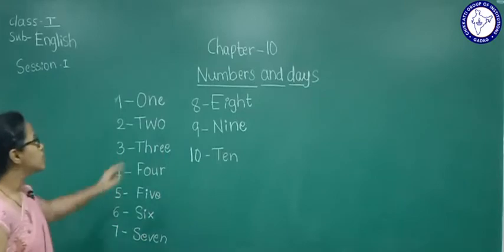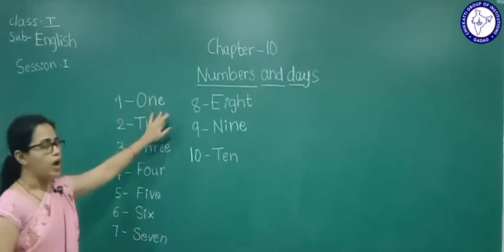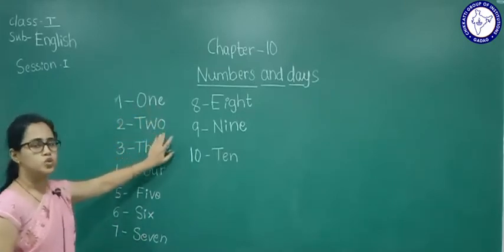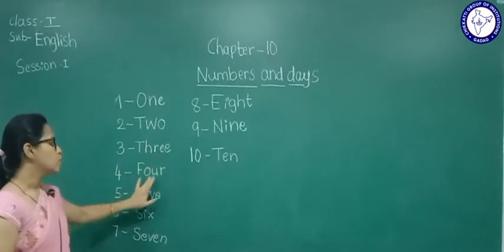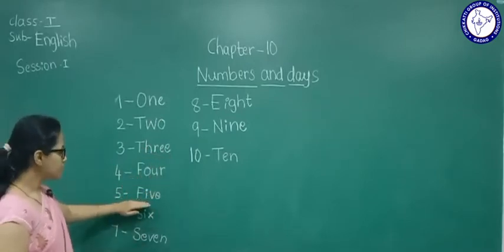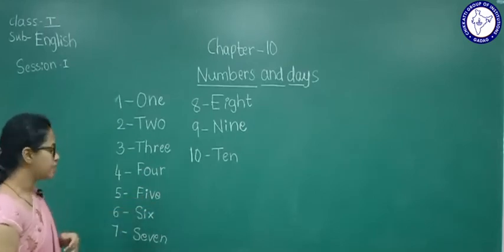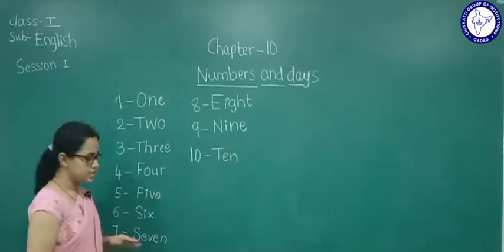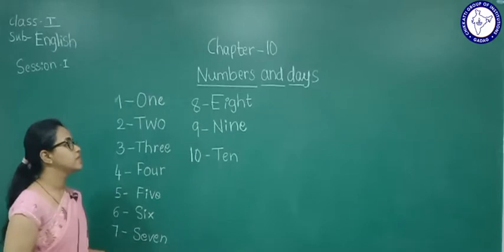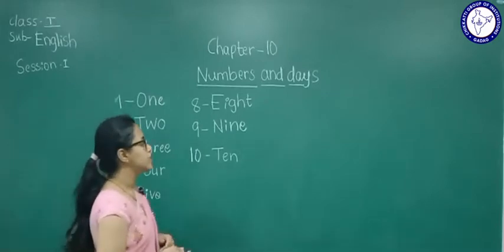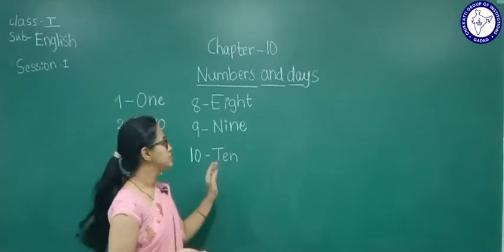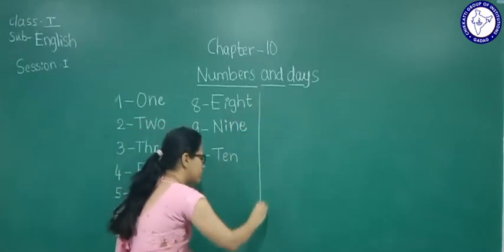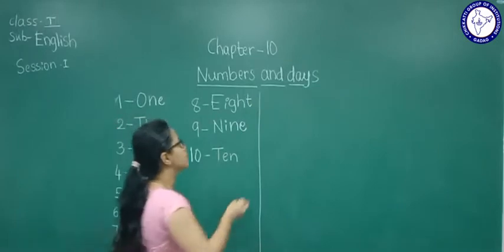We will repeat this one. One, O-N-E-1, T-W-O-2, T-H-R-E-E-3, F-O-U-R-4, F-I-V-E-5, S-I-X-6, S-E-V-E-N-7, E-I-G-H-T-8, N-I-N-E-9, T-E-N-10. So here we should write the next number.